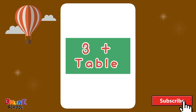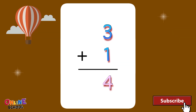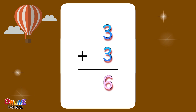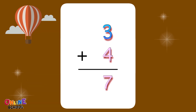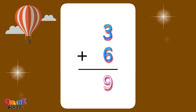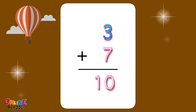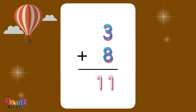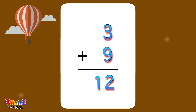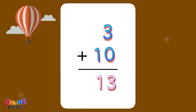Table 3: 3 plus 1 equals 4, 3 plus 2 equals 5, 3 plus 3 equals 6, 3 plus 4 equals 7, 3 plus 5 equals 8, 3 plus 6 equals 9, 3 plus 7 equals 10, 3 plus 8 equals 11, 3 plus 9 equals 12, 3 plus 10 equals 13.